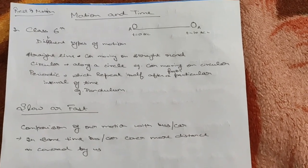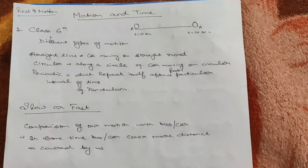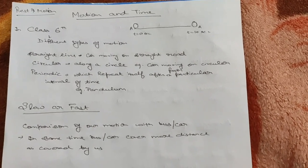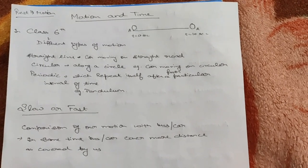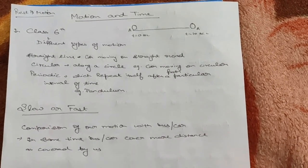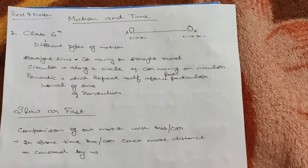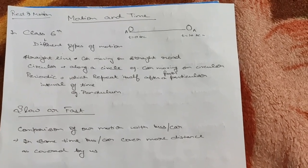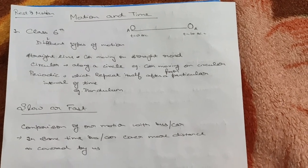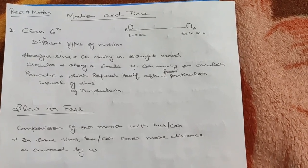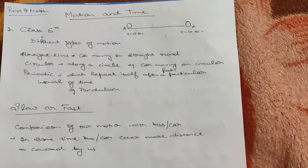When a car is moving on a straight road, does it change its position? Yes, because it is moving, so it falls under the category of motion. Similarly, on the circular path, when we walk on a circular park we are definitely changing our position with respect to time, so it is motion — not rest. The third type is periodic motion.